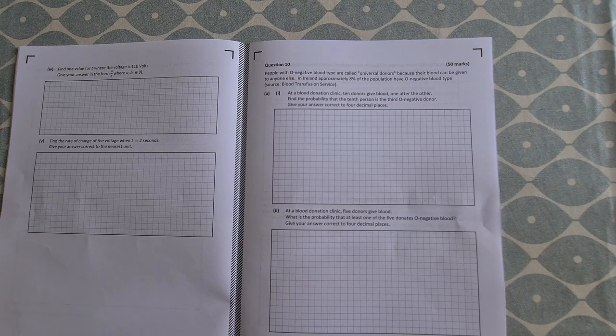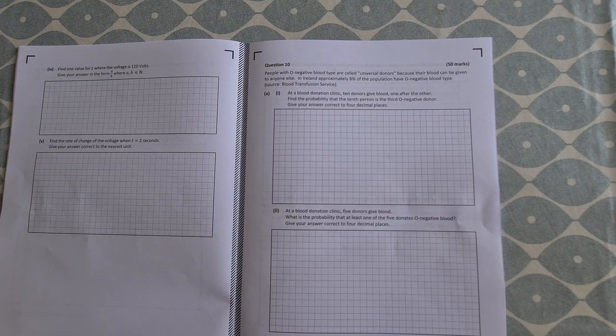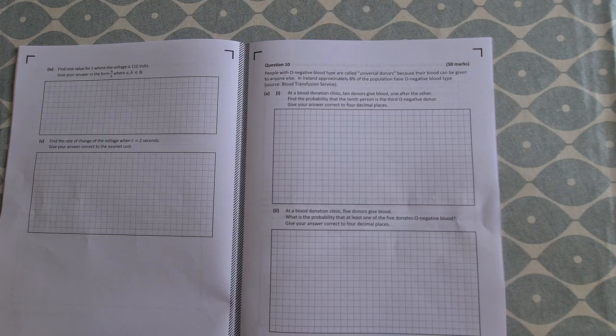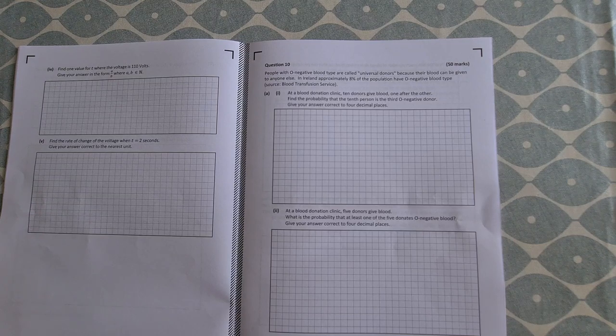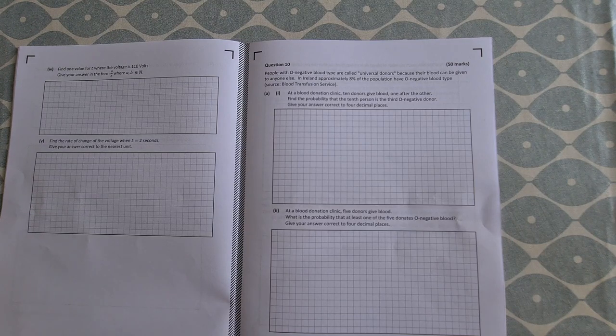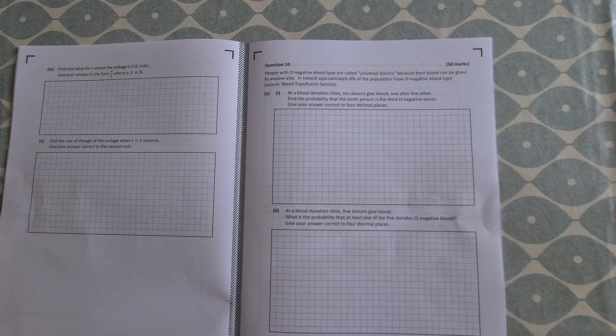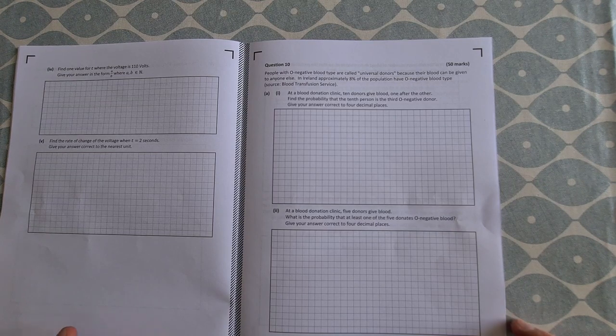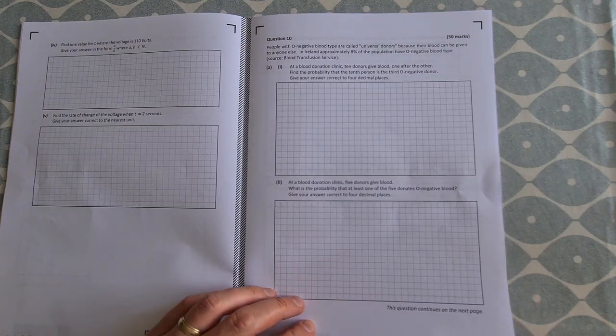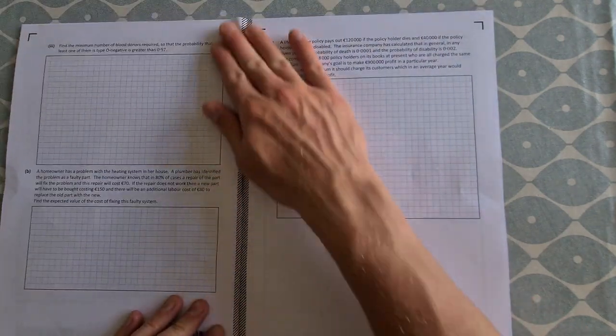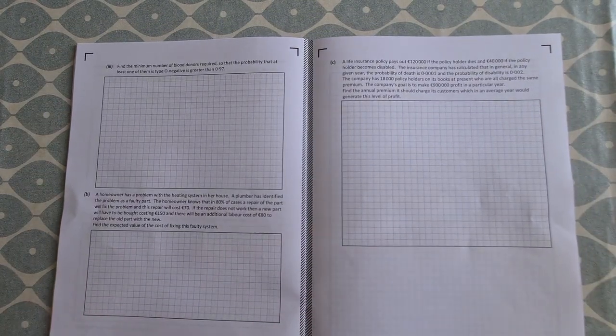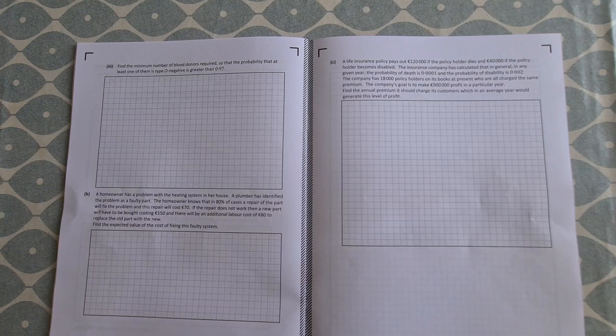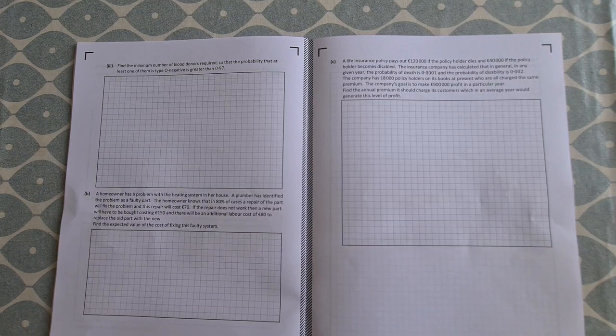So that's a very common type of question that you get in probability when you have Bernoulli trials with the 10th person being the third O negative donor in this case. So it's a very common type of question, you would have seen it before. Minimum number of blood donors required so that the probability of at least one of them being O negative is greater than 0.97. So a little bit different there. And then Part B moves on.